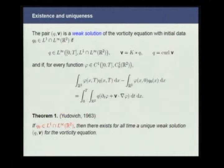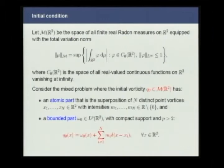This is the definition of weak solution for the vorticity equation. We have a classical result from Judovic from 1963, where he proved that if the initial vorticity belongs to L-infinity ∩ L1, then there exists for all times a unique weak solution of the vorticity equation.